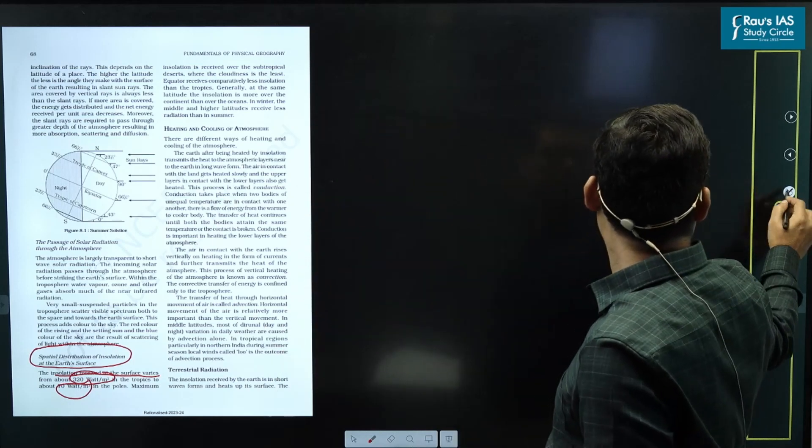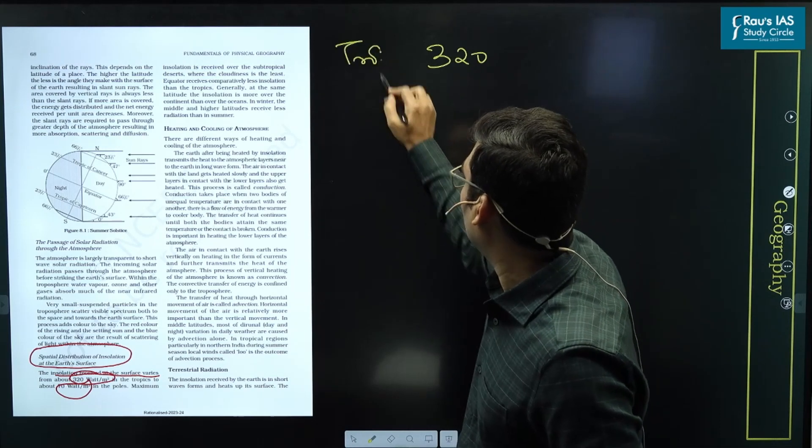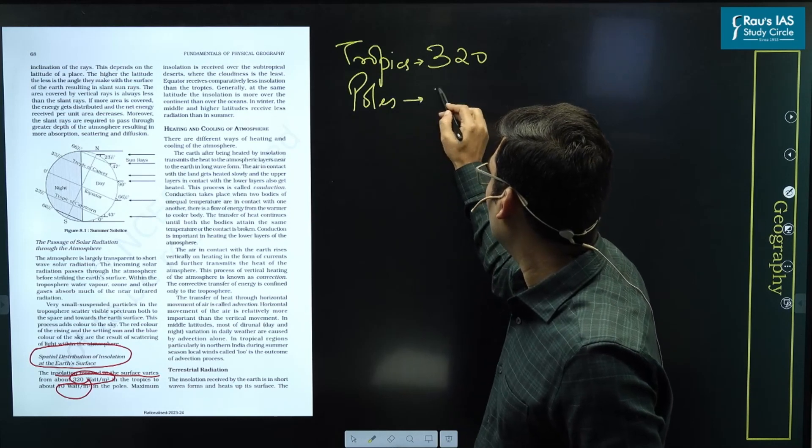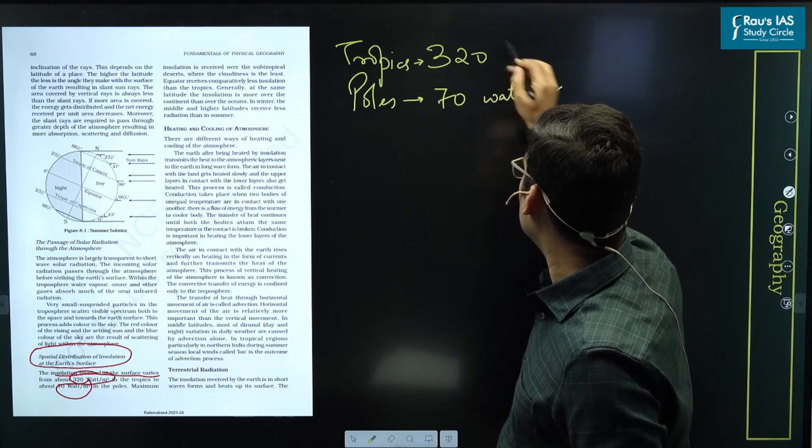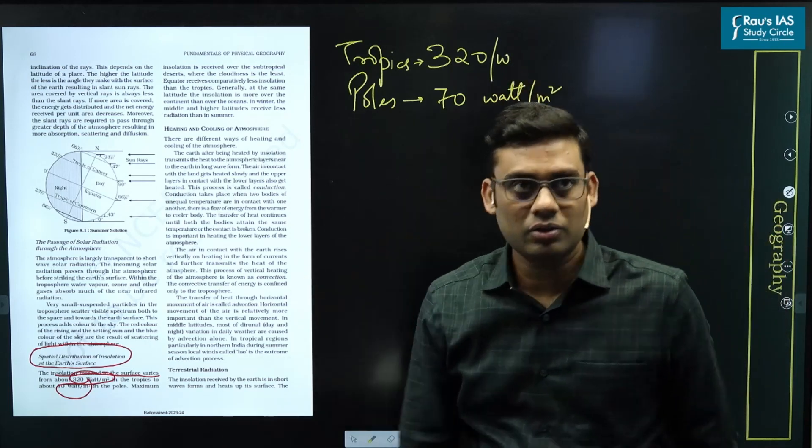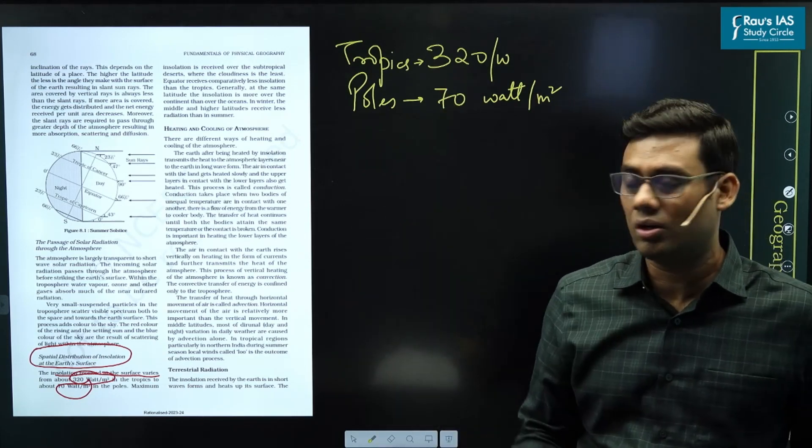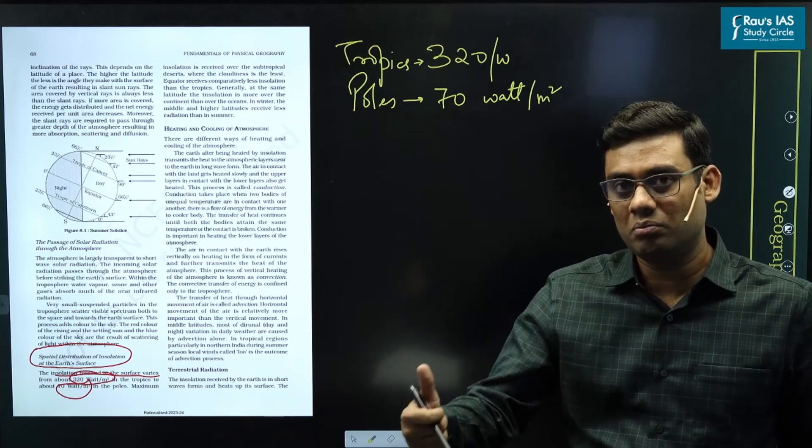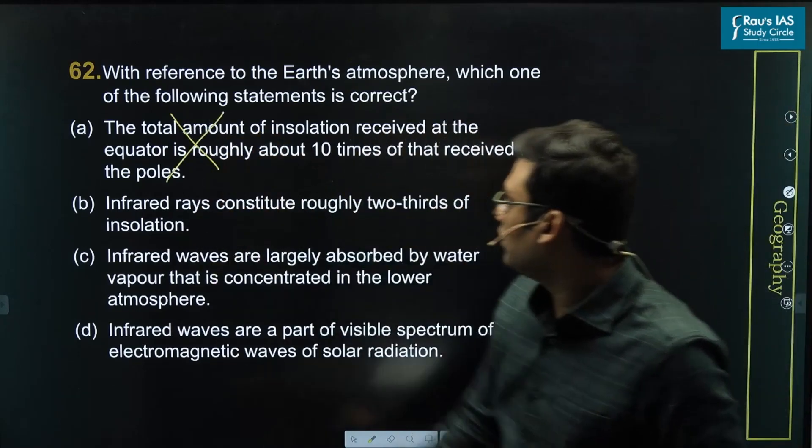At the tropics it is 320 and at poles is 70 watt per meter square. So very clearly we can see that this is not 10 times. Anyways, 10 becomes a very extreme multiple and hence the first statement becomes incorrect.